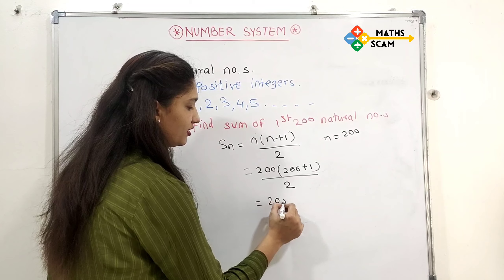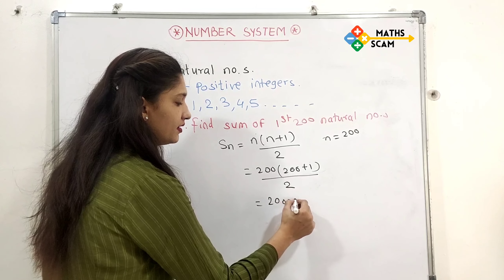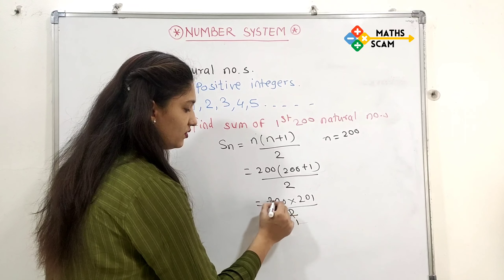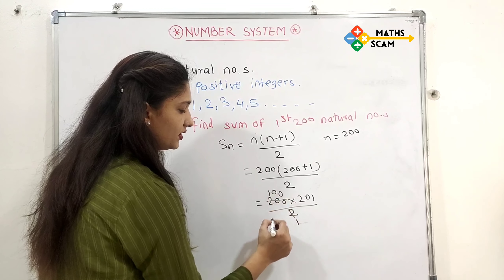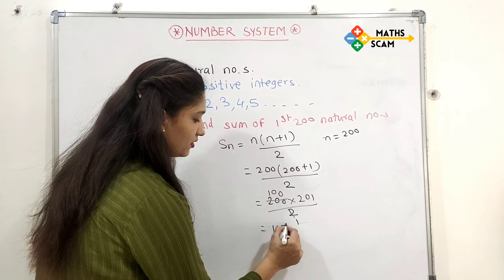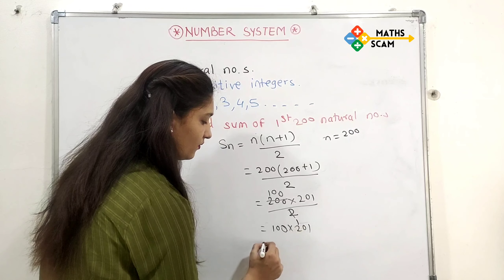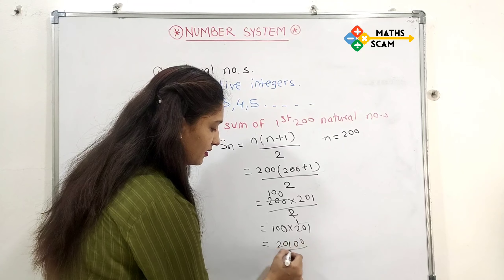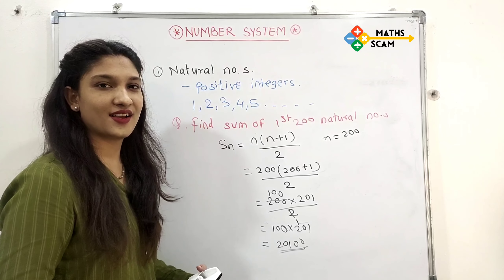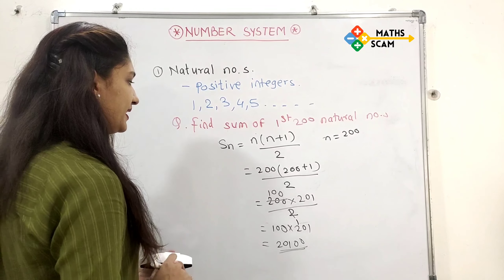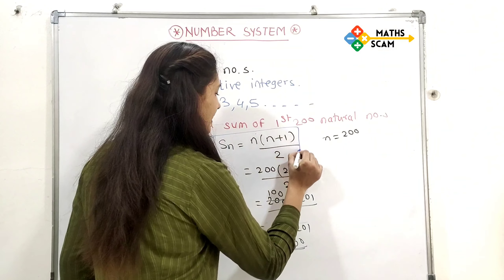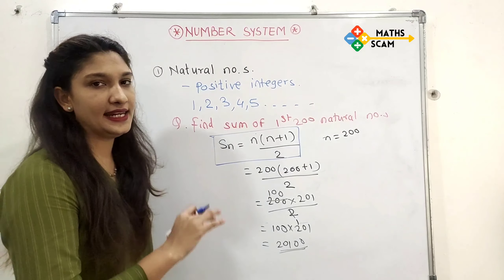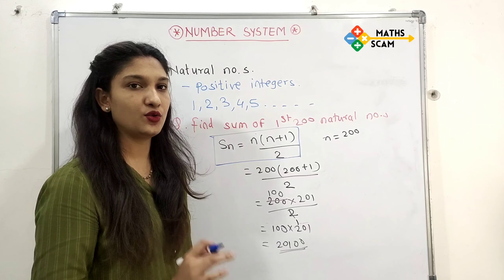First solve the bracket: 200 plus 1 equals 201, divided by 2. Dividing 200 by 2 gives 100. So 100 into 201. The answer is 20100. The formula for natural numbers is n into (n+1) divided by 2 — meaning the last number of the series multiplied by its next number, divided by 2.